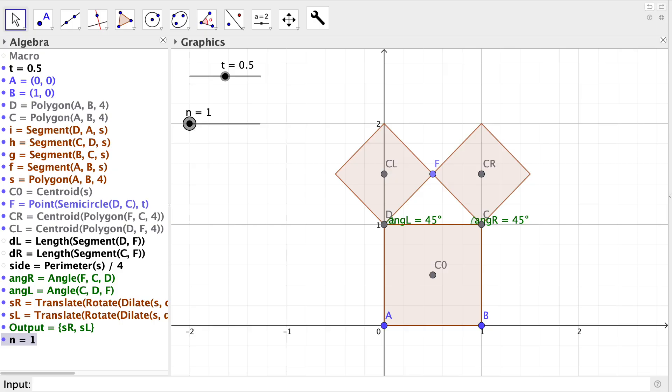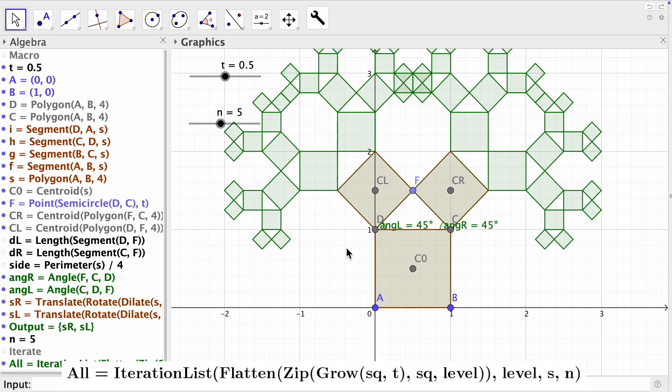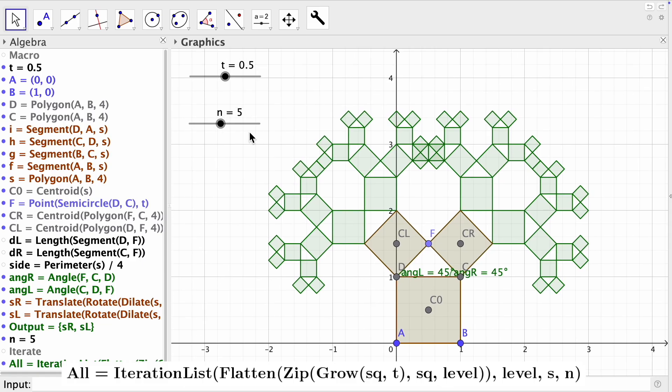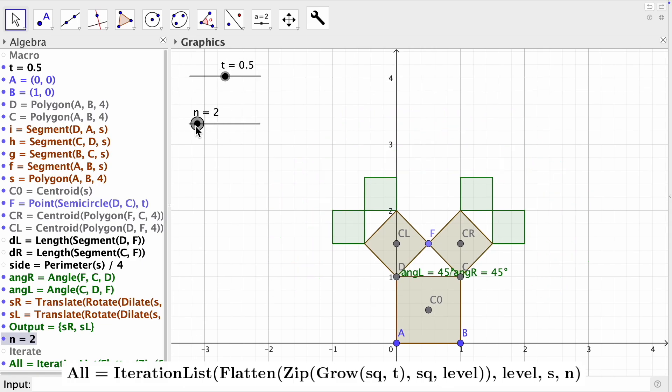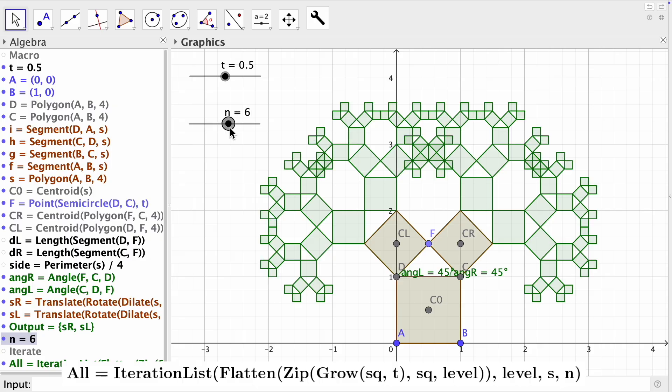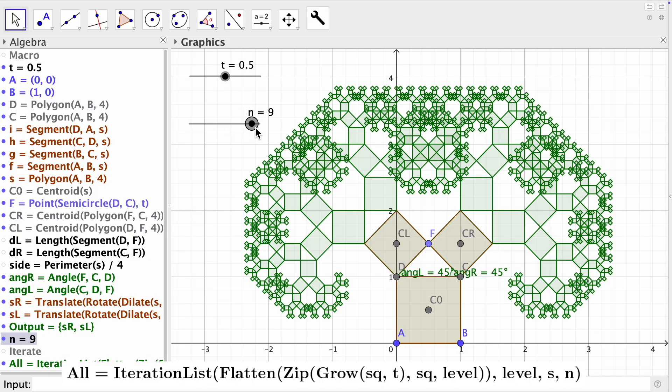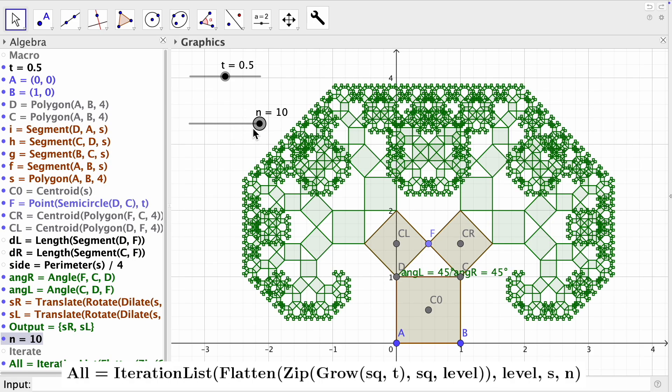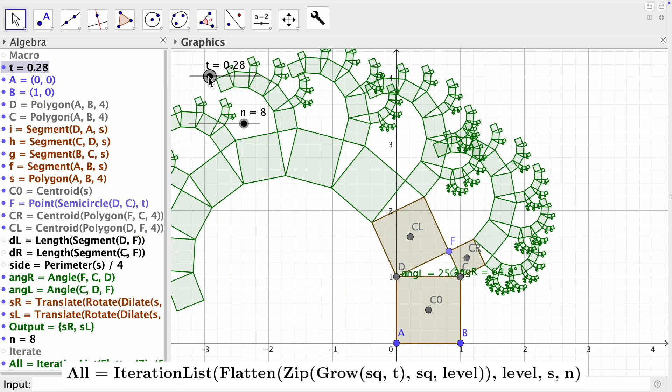The last step is to use iteration. For this, first we need a slider N from 1 to 10 with an increment of 1. Now we use the IterationList command with a couple of extra auxiliary commands. I made a video with more details about how this combination of commands works to create a list of iterated geometric objects. If you want to check it out, follow the link in the description.